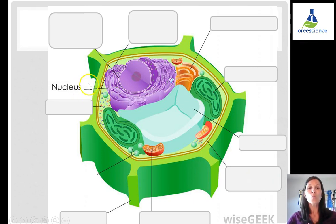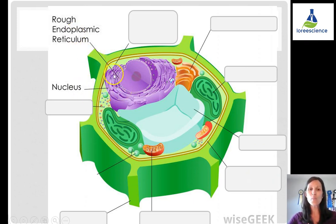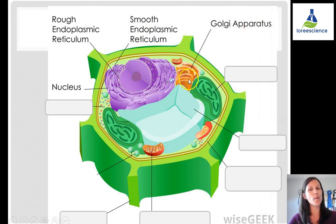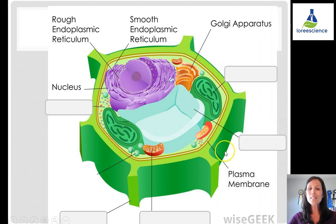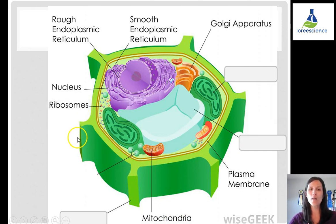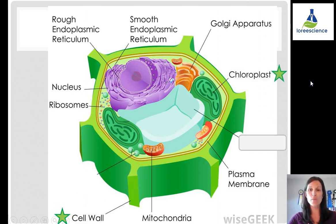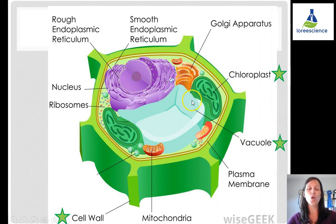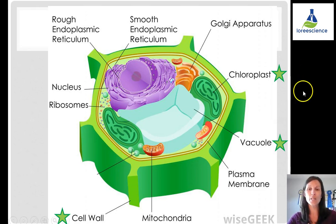Looking at the plant cell, we have a nucleus, rough endoplasmic reticulum attached to the nucleus, smooth ER with no ribosomes, Golgi apparatus as a stack of membranes away from the nucleus, plasma membrane as the inner layer, mitochondria because plant cells need energy, and free-floating ribosomes. Unique to plant cells are the cell wall — the rigid outer layer — and chloroplasts, because plants can't eat and need to take sunlight and turn it into food. The large central vacuole stores water, food, and nutrients since plants can't move around like animal cells.